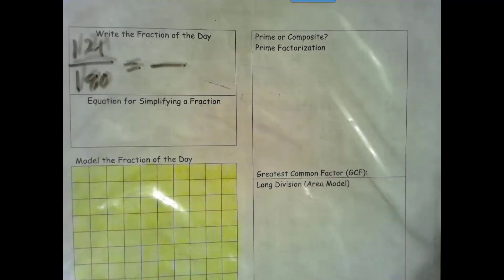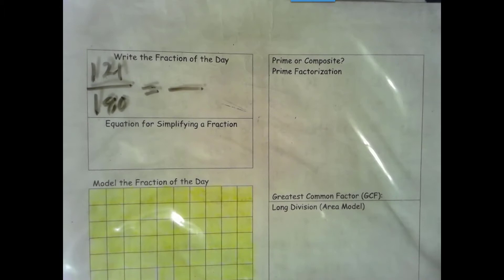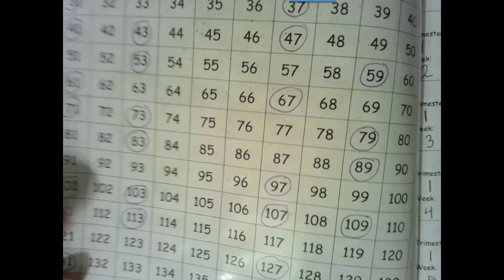Let's go ahead and think, is our numerator prime or composite? Well, it's not even, so that doesn't help us. 1 plus 2 plus 1 is 4, so it's not a multiple of 3. Let's look at our prime number sieve. 21 is not circled, so it is composite.